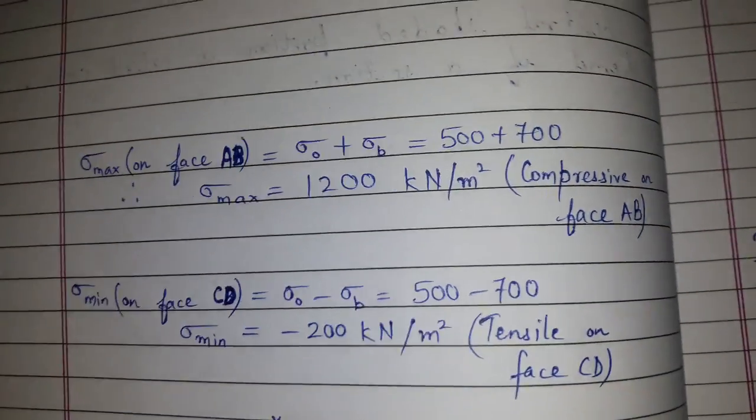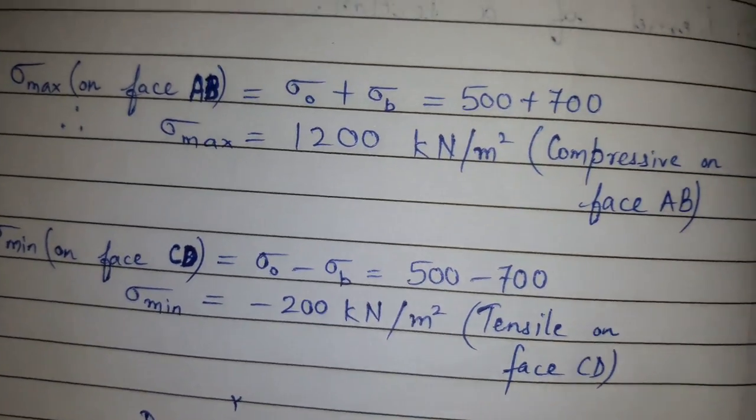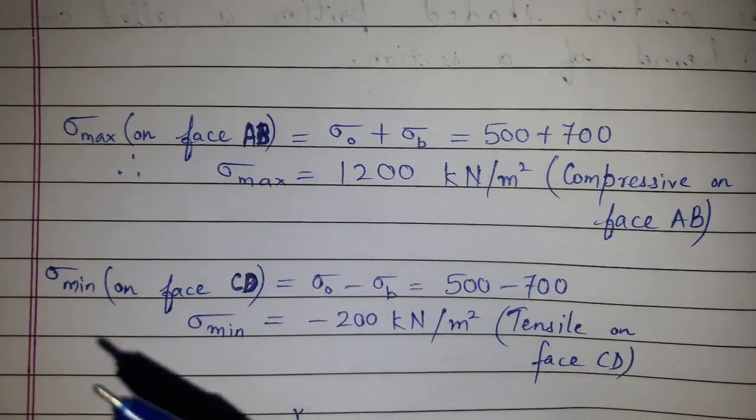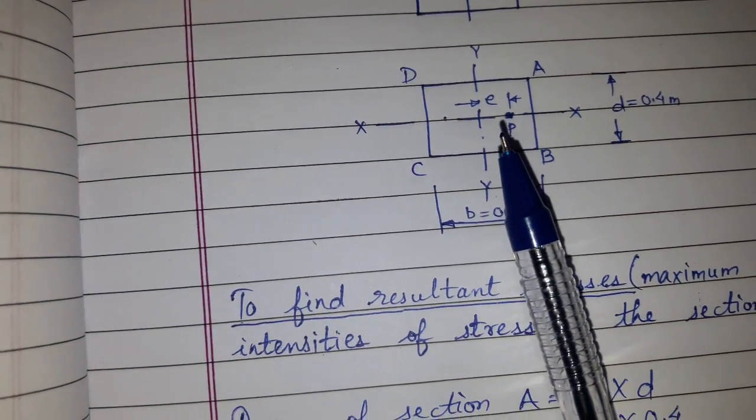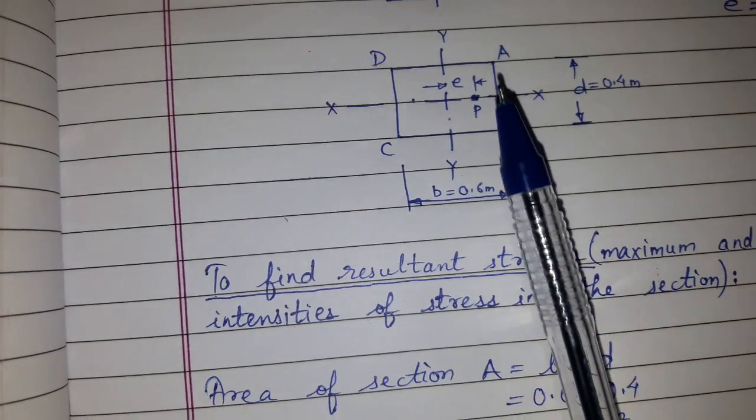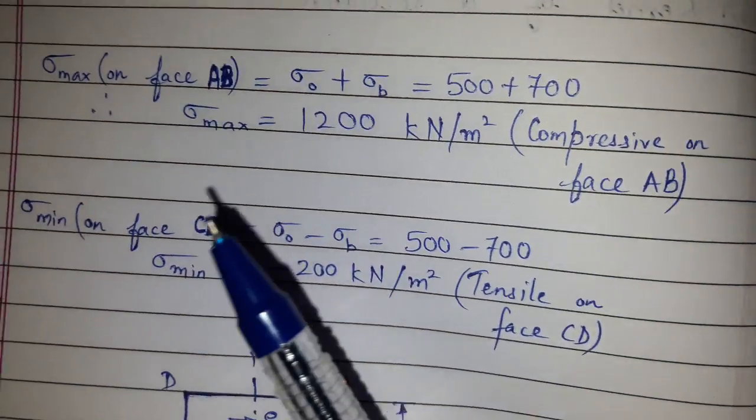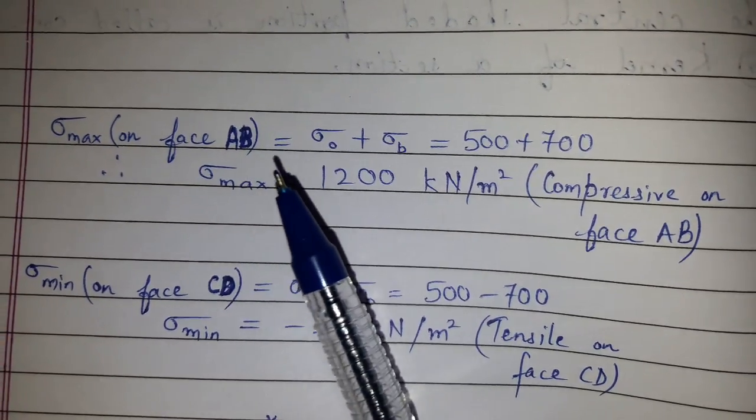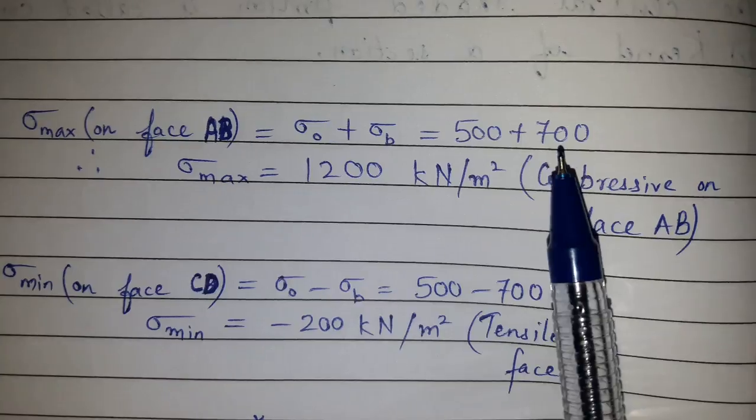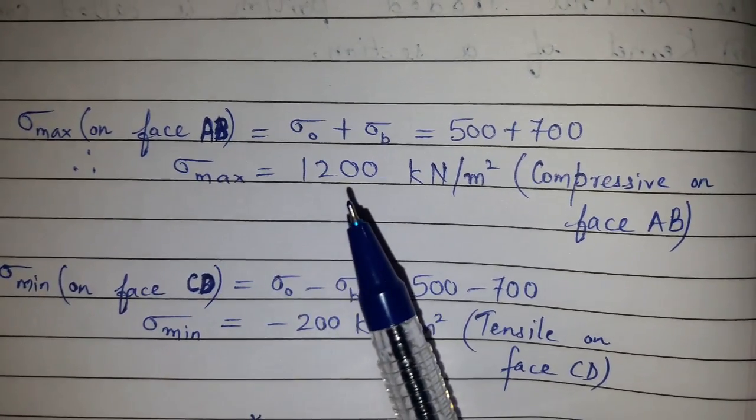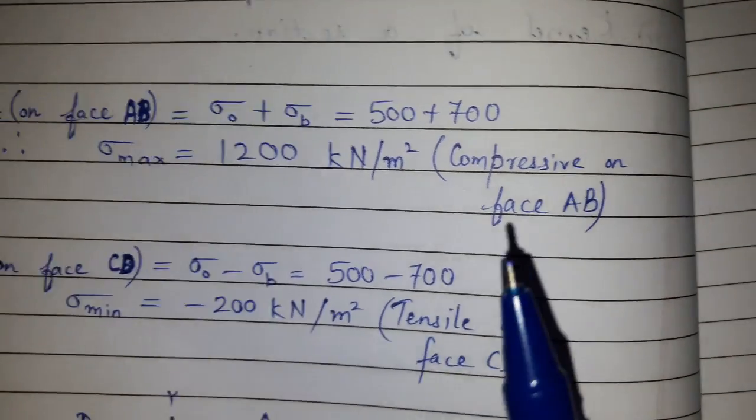Now we need to find the resultant stresses or maximum and minimum intensity of the stress in the section. Sigma maximum on face AB. Since it is acting here, what will be the stress on AB and what will be the stress on CD? Sigma maximum on face AB is sigma naught plus sigma B, so 500 plus 700. We got sigma maximum as 1200 kN per meter square. This is compressive on face AB.